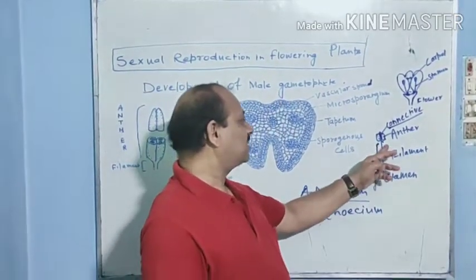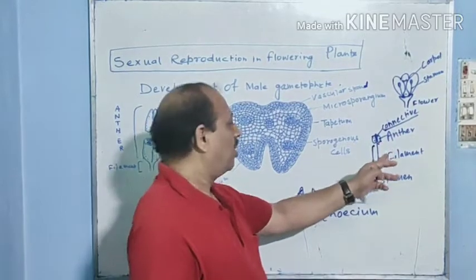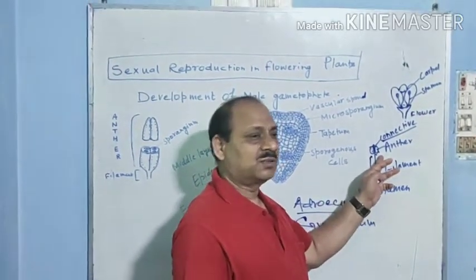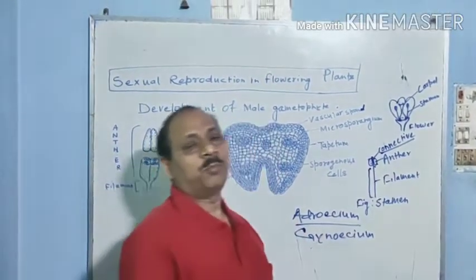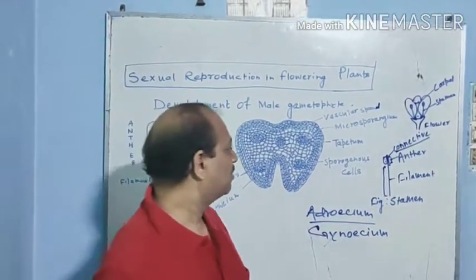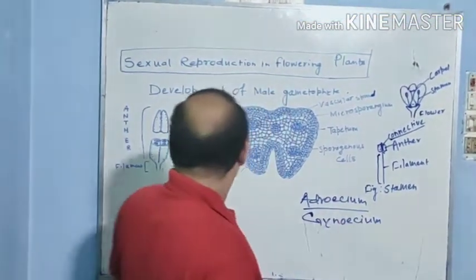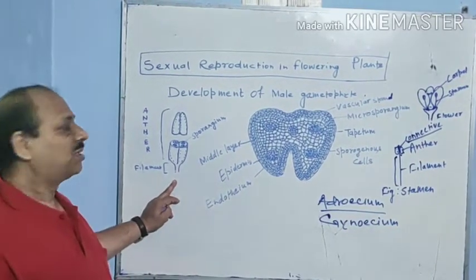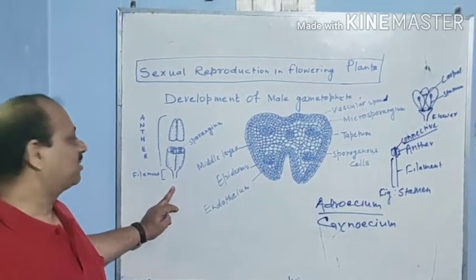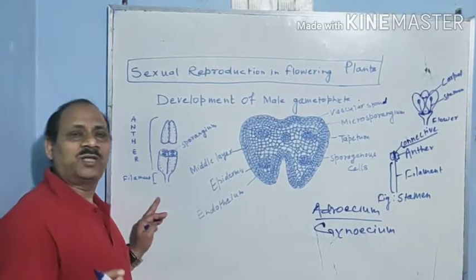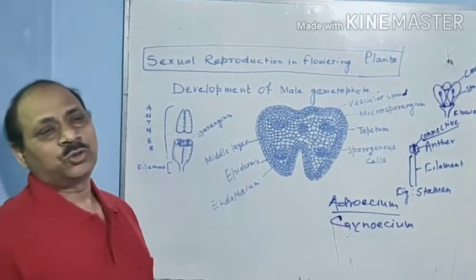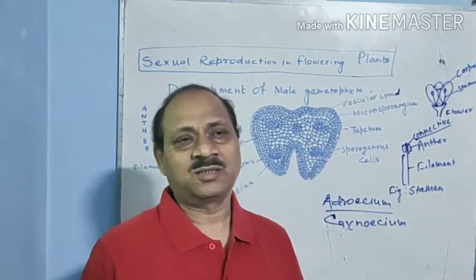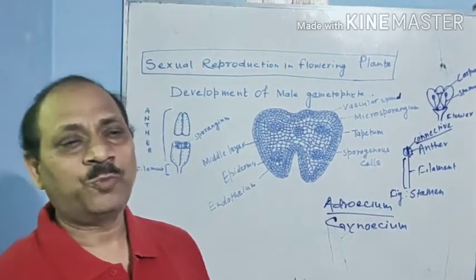The anther is the upper part of the stamen and it forms male gametes. Here is the enlarged diagram of the anther. The anther is usually bilobed, so it is known as dithecous, meaning it consists of two lobes.